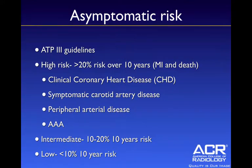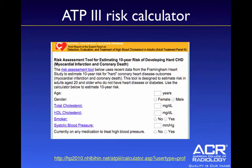Let's go back and talk about the ATP3 guidelines. Patients can be stratified into high, intermediate, or low risk categories, each associated with a 10-year risk of a major event such as myocardial infarction or death. If you have one of the four conditions listed under high risk, you automatically qualify as a high risk patient. Otherwise, you would need to be stratified using the ATP3 risk calculator.